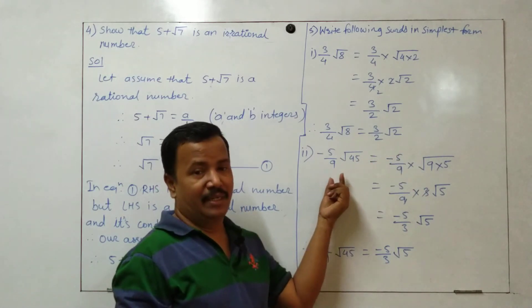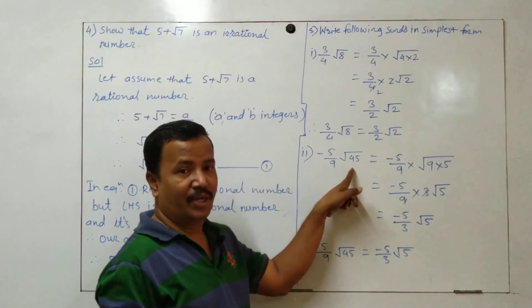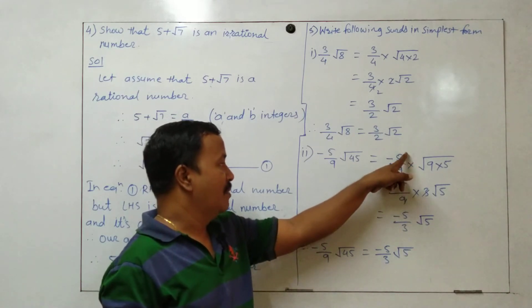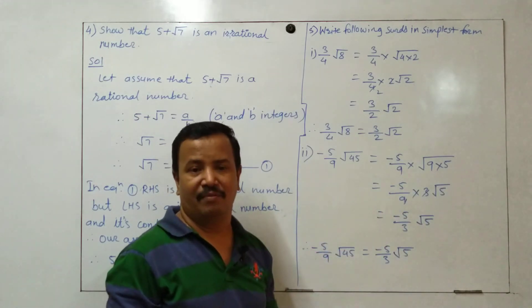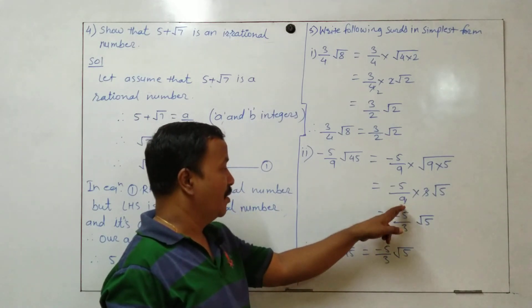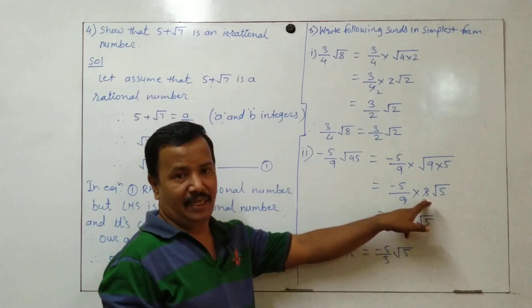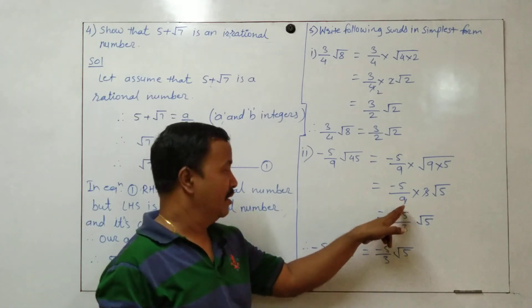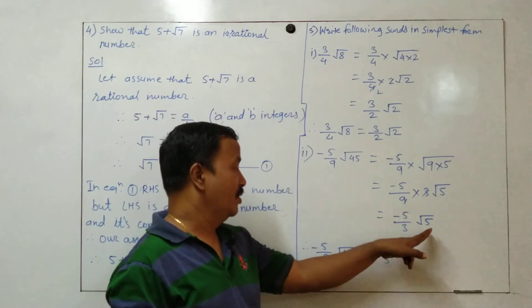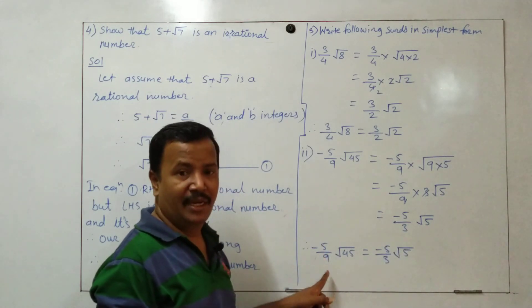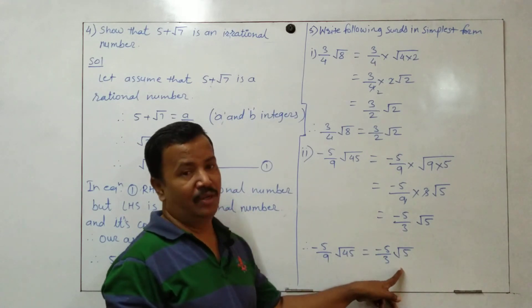Minus 5 upon 9 root 45. This is equal to minus 5 upon 9 into root of 9 into 5. 9 times 5 is 45. So minus 5 upon 9 into 3 root 5. Why? Because 9 ka square root is 3. 3 ones are 3, 3 threes are 9. So we get minus 5 upon 3 root 5. Therefore, minus 5 upon 9 root 45 is equal to minus 5 upon 3 root 5.